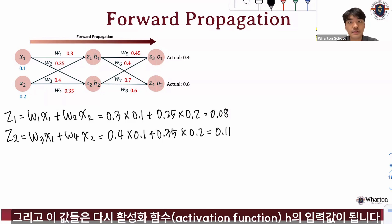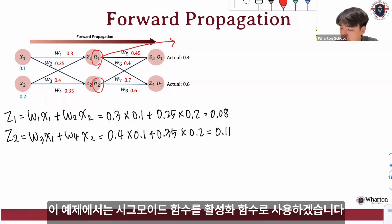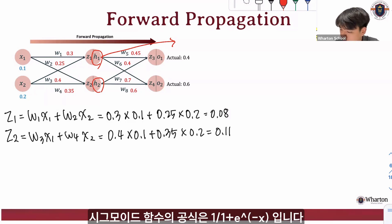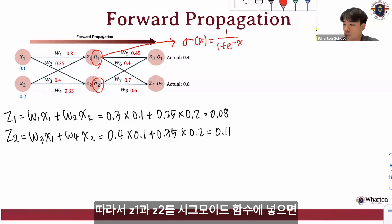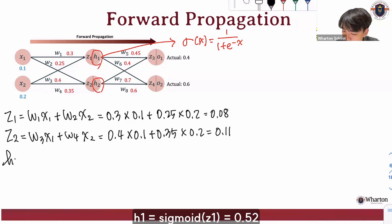And these values are going to be the input of the activation function h here for these two. And we're going to use sigmoid function for our activation function. So the formula would be sigmoid of x of 1 over 1 plus e to the negative x. So if we put z1 and z2 into this sigmoid function, we get h1 equals sigmoid of z1, which is 1 over 1 plus e to the negative 0.08, which is 0.52.